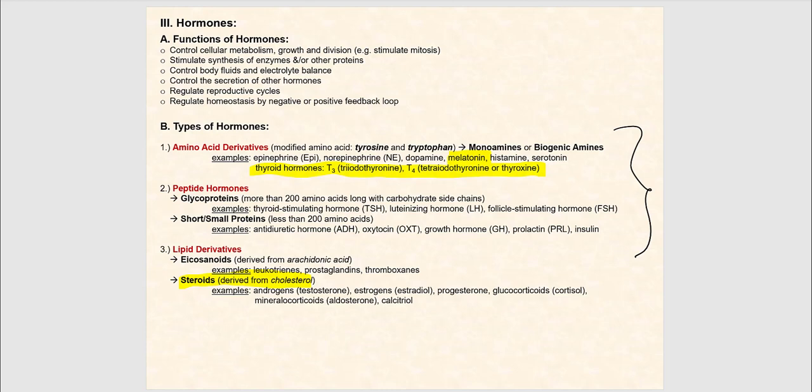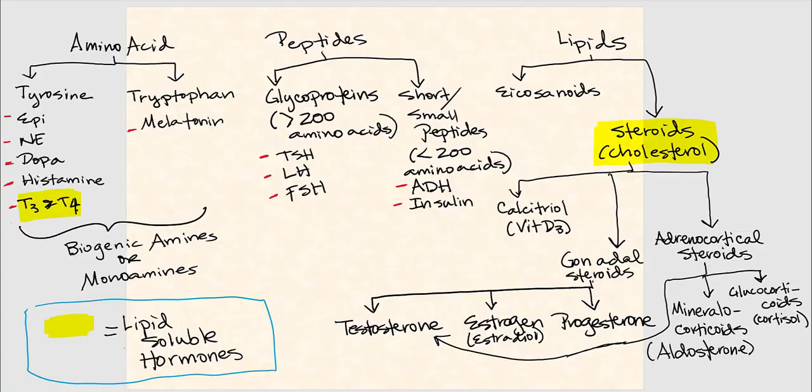One last thing to point out: if we bracket amino acid derivatives and peptide hormones together, we're going to say these are all protein-derived, since amino acids are the building blocks of protein. So if you memorize the steroids and I give you antidiuretic hormone, you know ADH is not one of the steroids, so your answer should be that it's a protein-derived hormone. If I say calcitriol — the active form of vitamin D3 — your answer should be that it's a lipid-derived, specifically a steroid hormone derived from cholesterol.